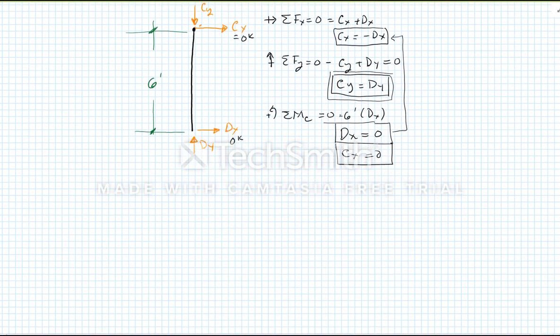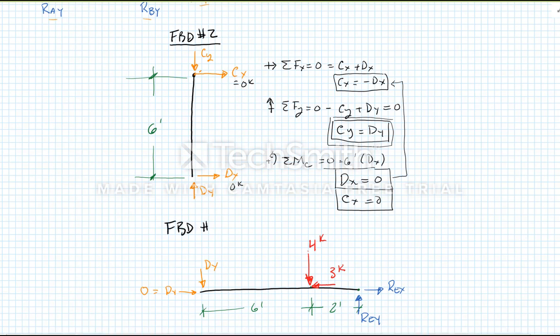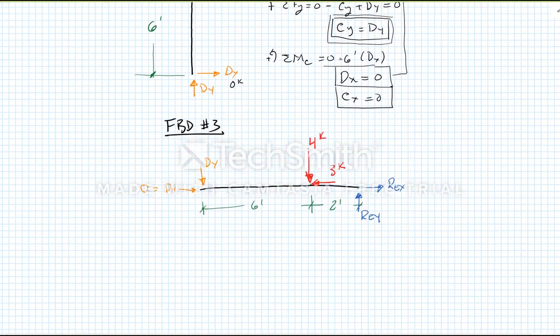Let's jump down to our next free body diagram. I've put in our unknown reactions, I've put in our resultants of our inclined load, and then I'm going to put DX here and DY here. Now we know that DX is equal to zero from up above. So now we have for free body diagram number three, three unknowns and three equations of equilibrium. We can go ahead and solve this one.